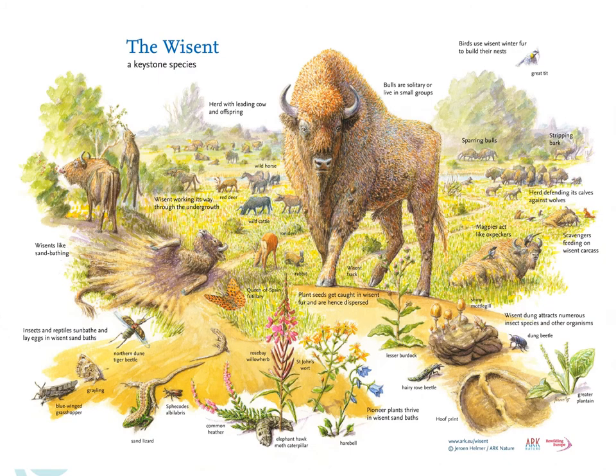With the bison as a model ungulate, we can see that ungulates are active in the different filters leading to the local plant community: dispersal — as you can see seeds clinging to its fur — the environmental filter through deposition of feces and footprints and soil disturbance by sand-bathing, and also different biotic interactions either through selective herbivory, dung beetles, or other animals.